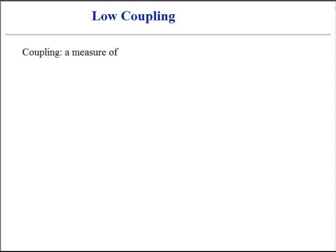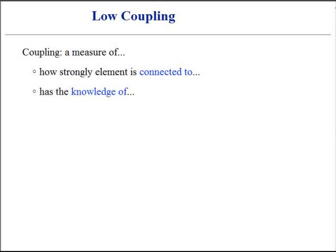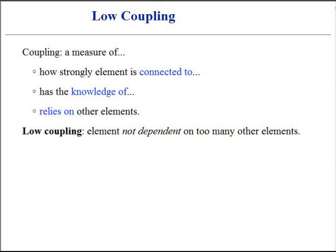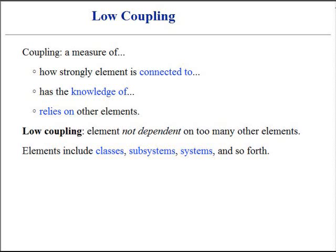Coupling is a measure of how strongly one element is connected to, has the knowledge of, or relies on the other elements. An element with low or weak coupling is not dependent on too many other elements. The expression 'too many' is highly context-dependent and needs to be examined on a case-by-case basis. These elements include classes, subsystems, systems, and so forth.